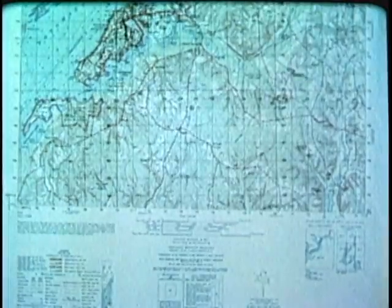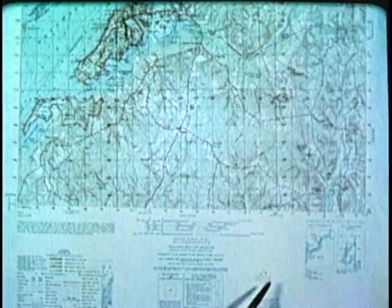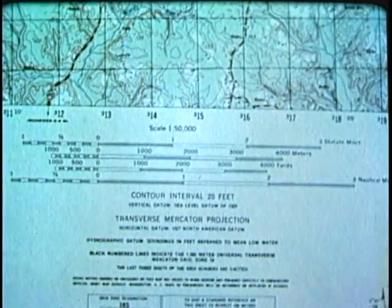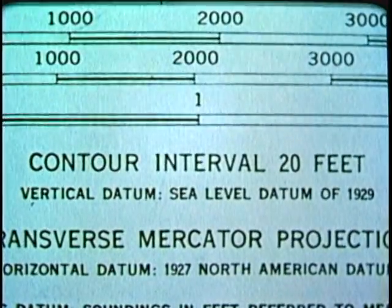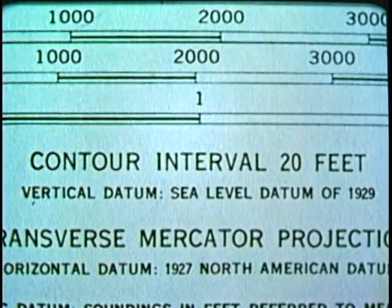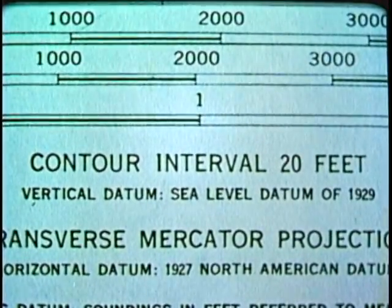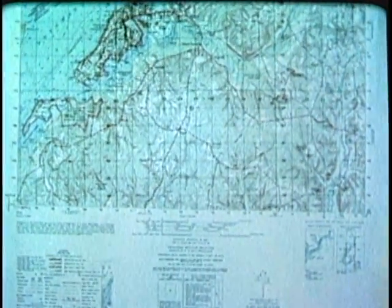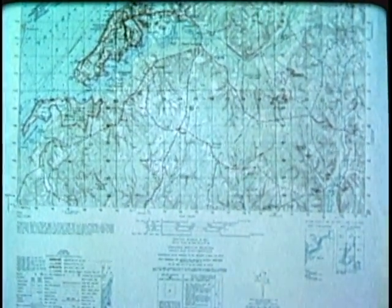First, let us note what might be called the operating instructions. These are placed around the map edges and termed marginal information. This contains such essential information as the scale to which the map is drawn, graphic or bar scales to be used in translating map distances into actual ground distances, and the contour interval or vertical distance represented by contour lines on the map. The lower left-hand corner contains the legend, which illustrates and identifies the symbols used on the map. For speed and efficiency in map reading, the first requirement is to learn and memorize the more common symbols.